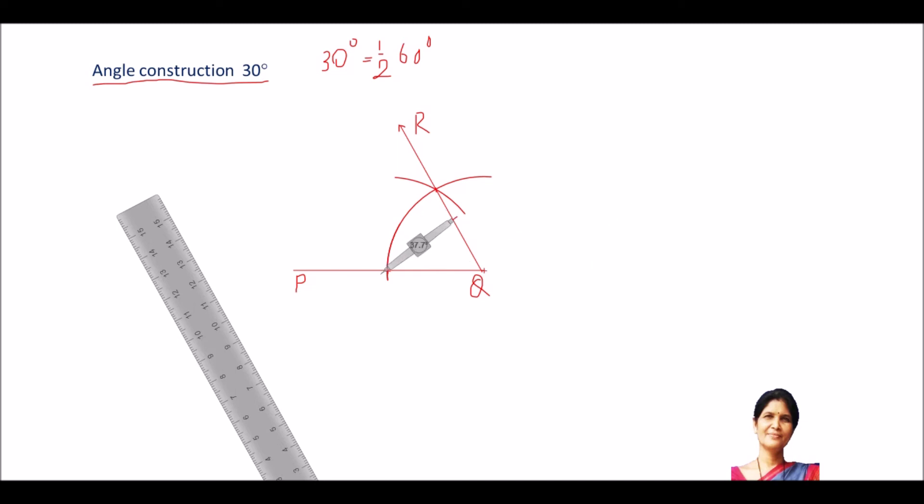I will put the compass at these two intersection point. One is this arc intersecting this point and I will draw an arc here. Like this. With the same measurement of the arc, with arc of same radius, I will put the compass in the intersection point here and I will draw an arc of same radius to intersect the previous arc.